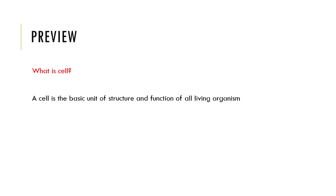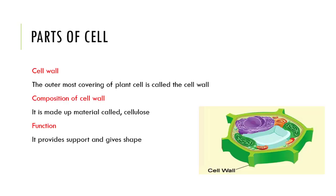Today we will discuss the parts of cell. First of all, we will discuss about the cell wall. The outermost covering of plant cell is called cell wall. As you can see in this diagram, this is the outermost covering of plant cell.